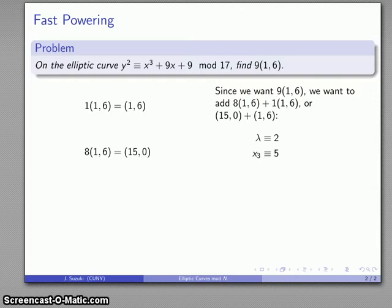Lambda will be 2, and find my x3, and that gives me my y3 value. 9(1,6) is going to correspond to the point (5,3).